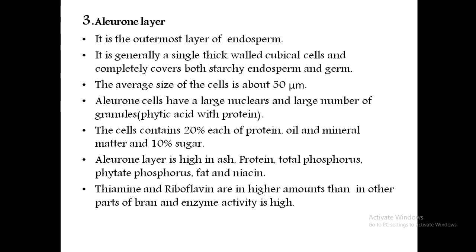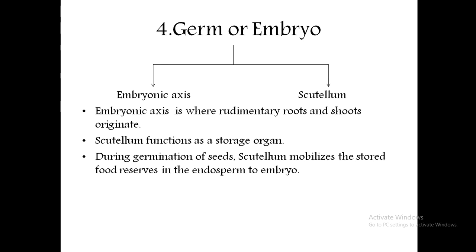The next part is the germ or embryo, which has two parts: the embryonic axis and the scutellum. The scutellum acts as a highway that allows energy or starch to pass through to the germ cell during germination. It is the endosperm that nourishes the germ cell while germination is ongoing. The embryonic axis is where the rudimentary roots and shoots are present. The scutellum functions as a storage organ and mobilizes stored food from the endosperm to the embryo during germination.